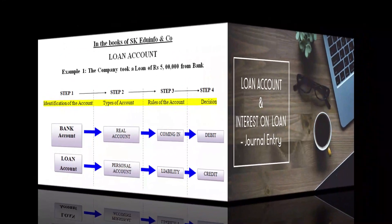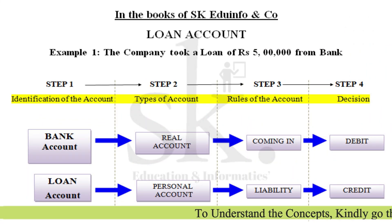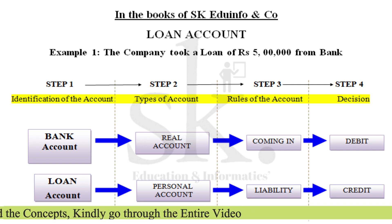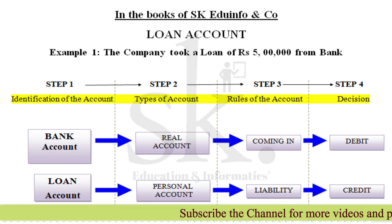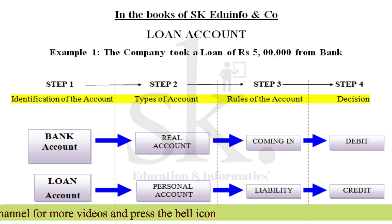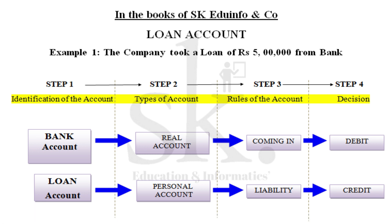Example one: the company took a loan of rupees five lakhs from a bank. We identify two account heads: bank account and loan account. Since the company has taken a loan, the bank will directly transfer the loan amount to the company's bank account. Bank account, being a real account, money coming in will be debited. The loan account is a liability, so it is credited. Thus, bank account is debited and loan account is credited.